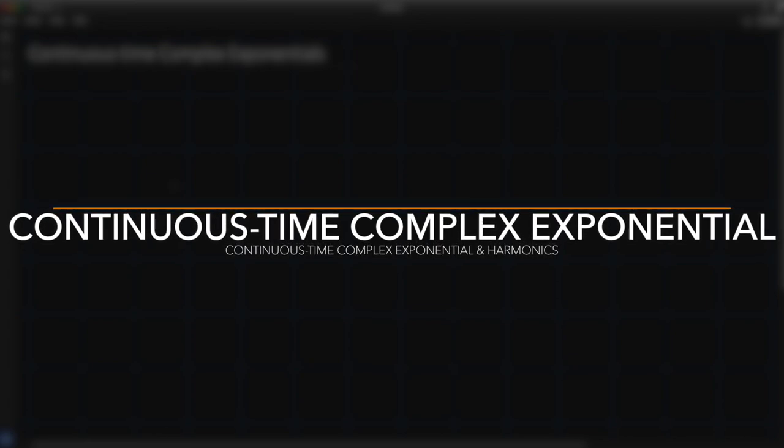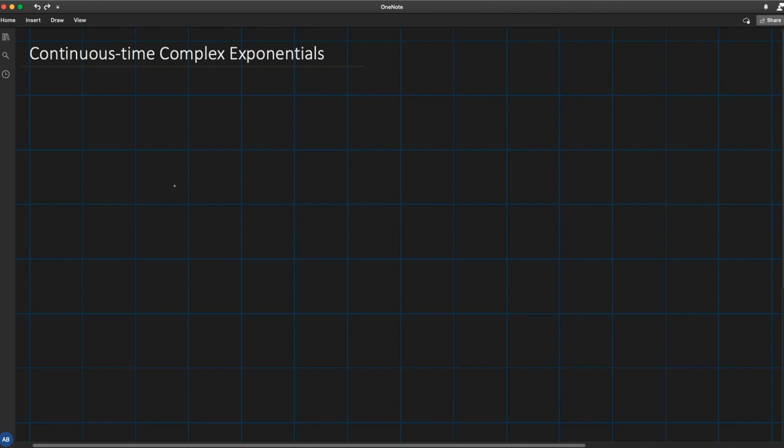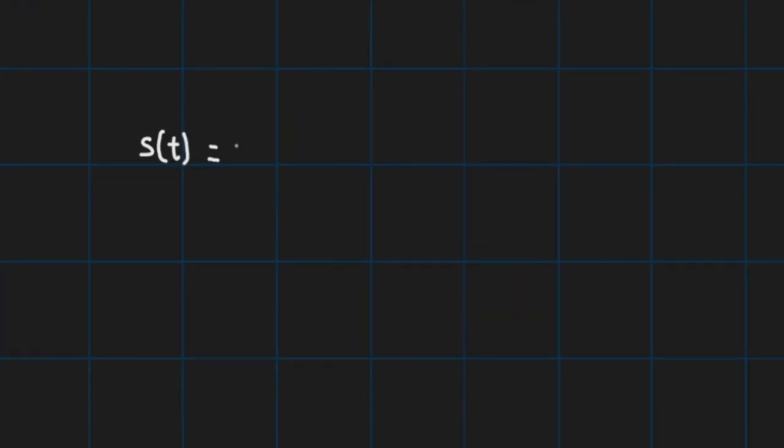Now let's define a continuous-time exponential. Say I've got a signal s(t) which is given as follows: it's the exponential of jkΩ₀t, or using the expression Ω₀ = 2πf₀, we get e^(j2πkf₀t).